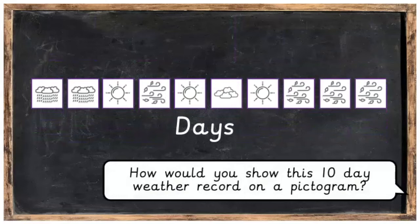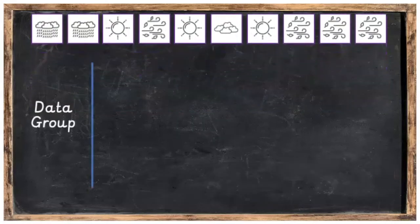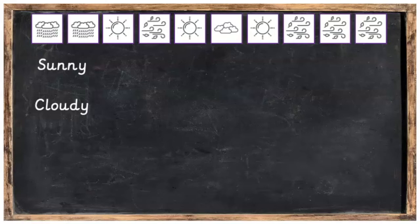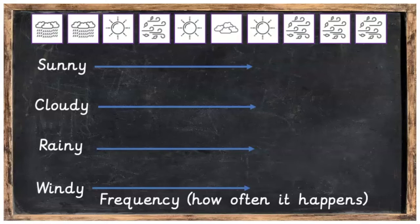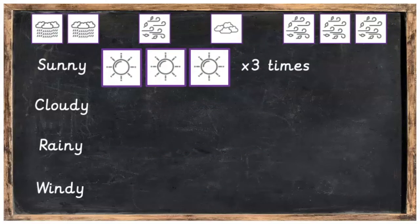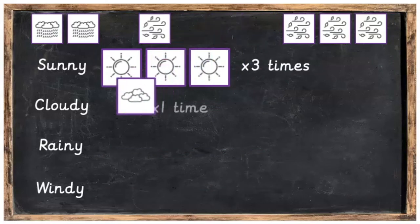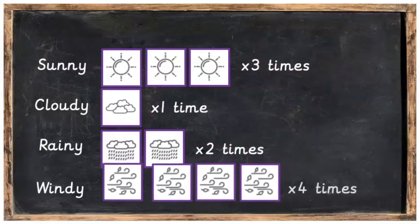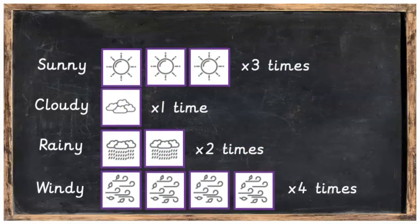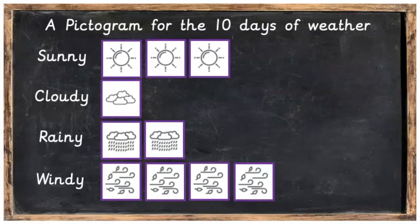The question is, how would you present this 10-day weather record on a pictogram? The first thing you would do is put the data group labels down the side — in this case the weather: sunny, cloudy, rainy, and windy. Then you would put in the frequency, which is how often it happened. It was sunny three times, cloudy one time, rainy two times, and windy four times. So we used our pictures to create a pictogram for the 10 days of weather.